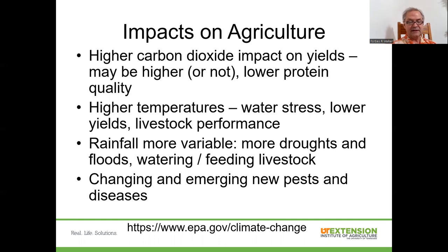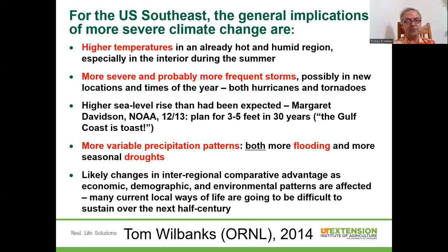As weather patterns and climate change, we see diseases and pests emerging and changing. For example, in Tennessee we've seen in recent years an influx of tick species that we haven't seen before. We also see other normal pests of row crops as well as diseases coming in as we see differences in temperatures and rainfall patterns.